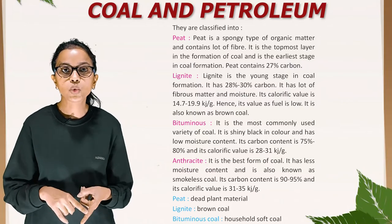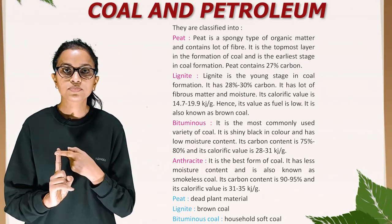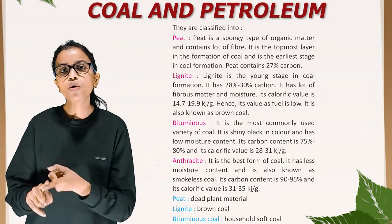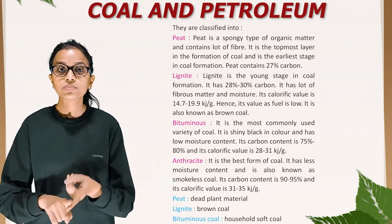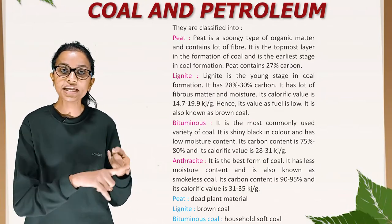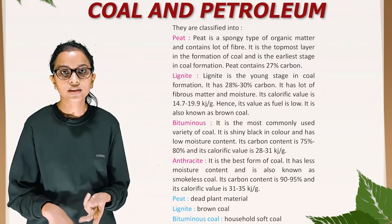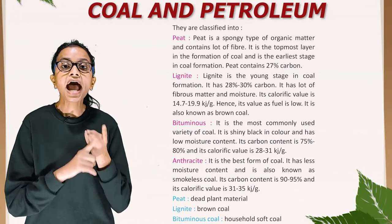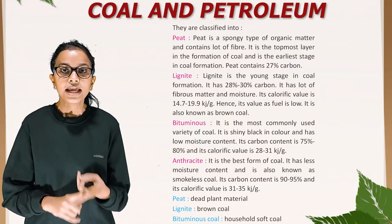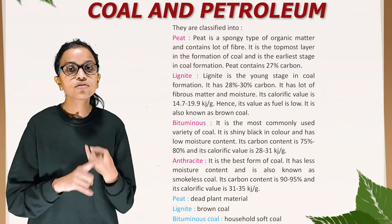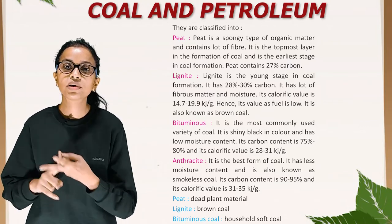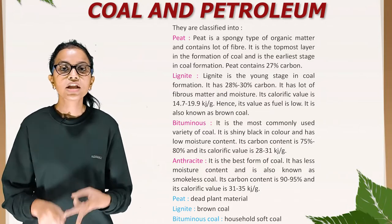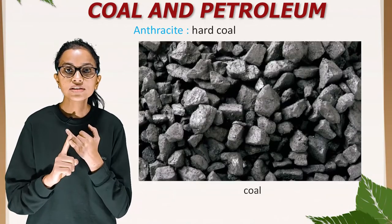Lignite is also known as brown coal. The next type is bituminous — the most commonly used variety of coal. It is shiny black in colour with low moisture content; its carbon content is 75 to 80% and its calorific value is 28 to 31 kilojoule per gram. Anthracite is the best form of coal; it has less moisture content and is also known as smokeless coal, with carbon content of 90 to 95% and calorific value of 31 to 35 kilojoule per gram. The progression goes: peat → dead plant material → lignite (brown coal) → bituminous coal → anthracite (hard coal).